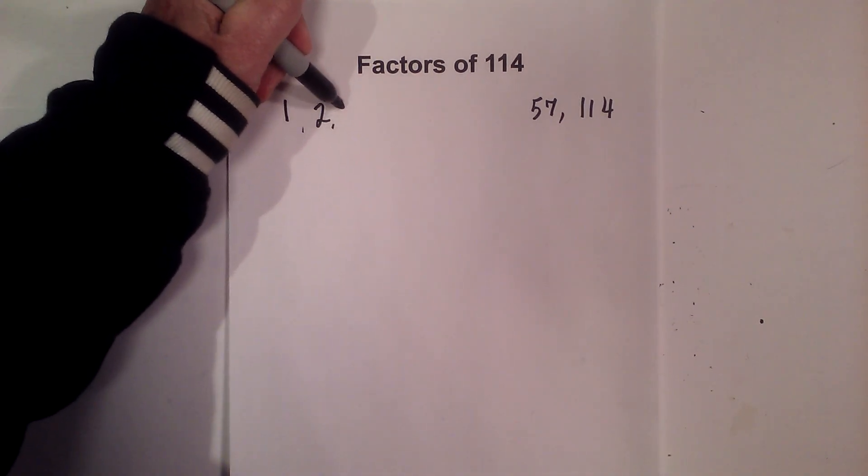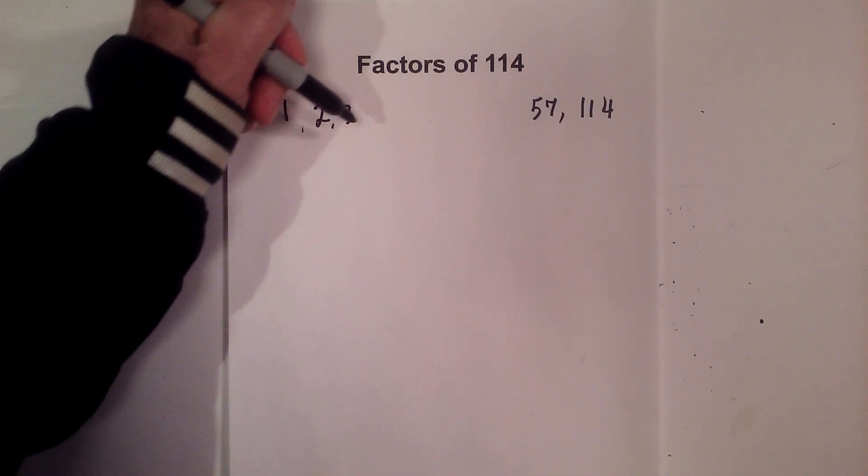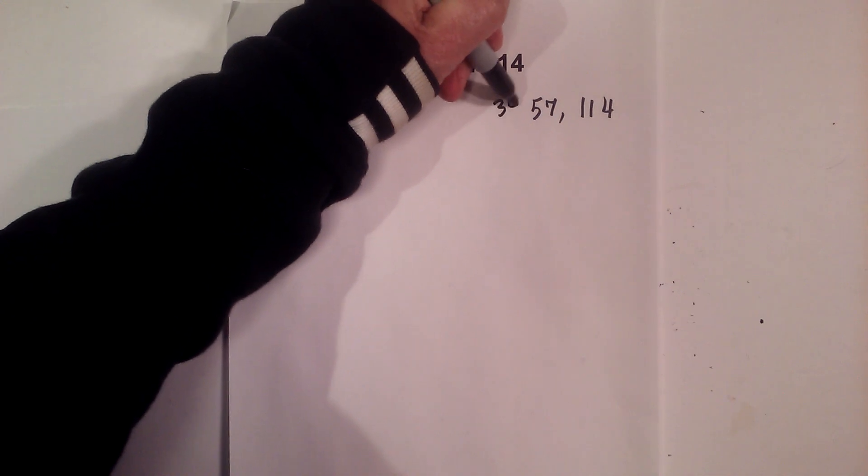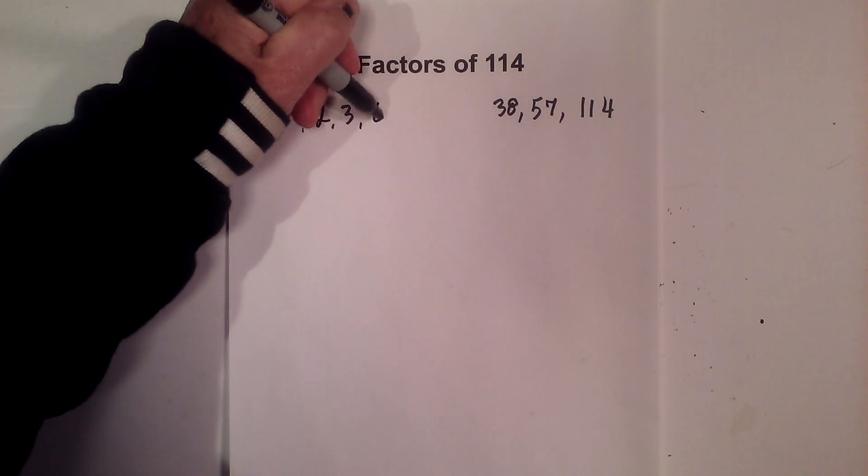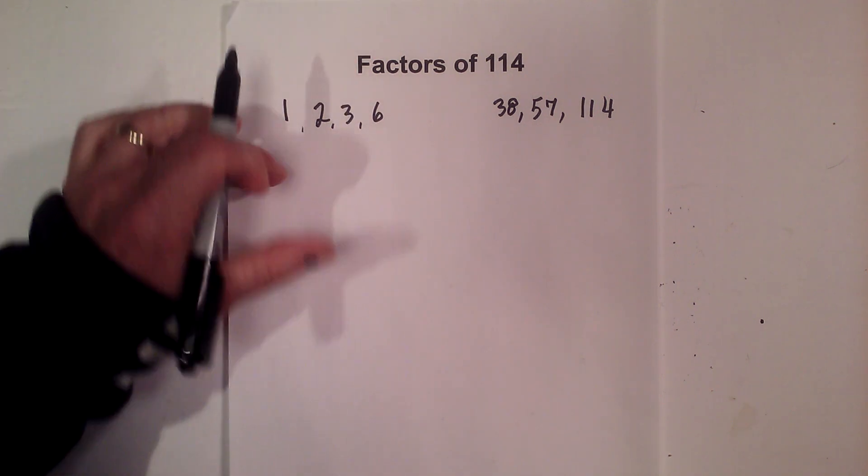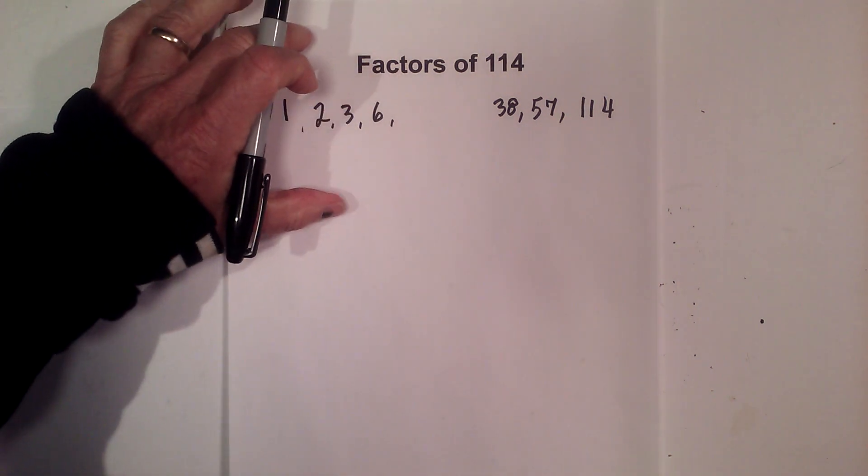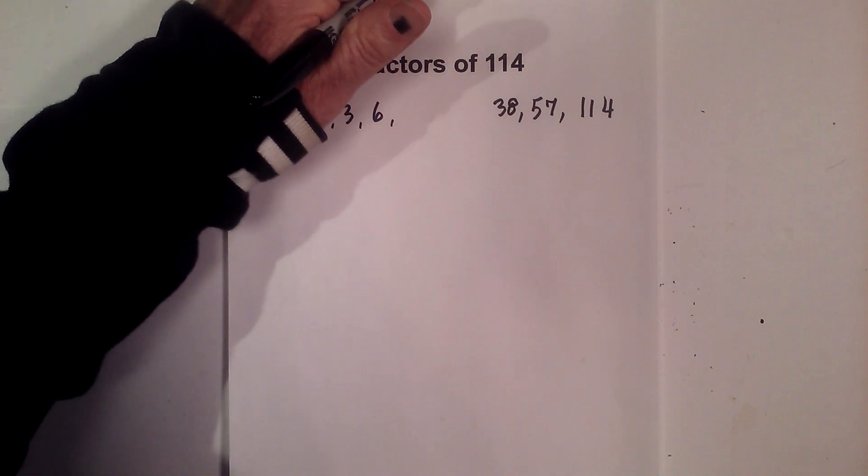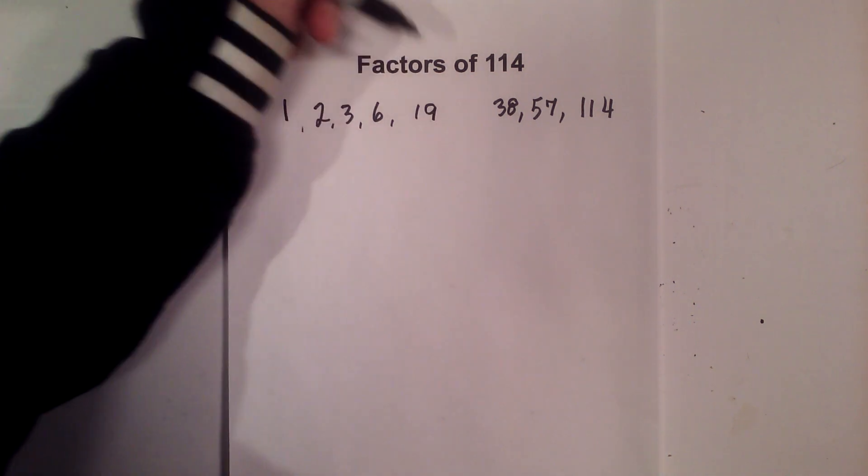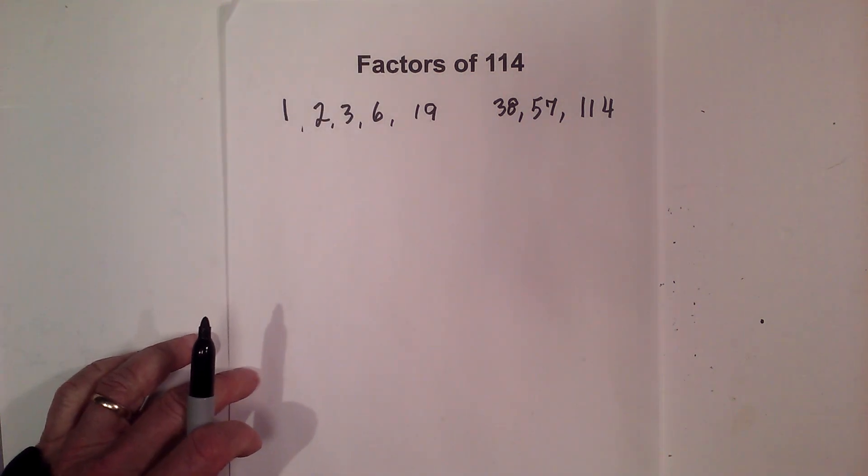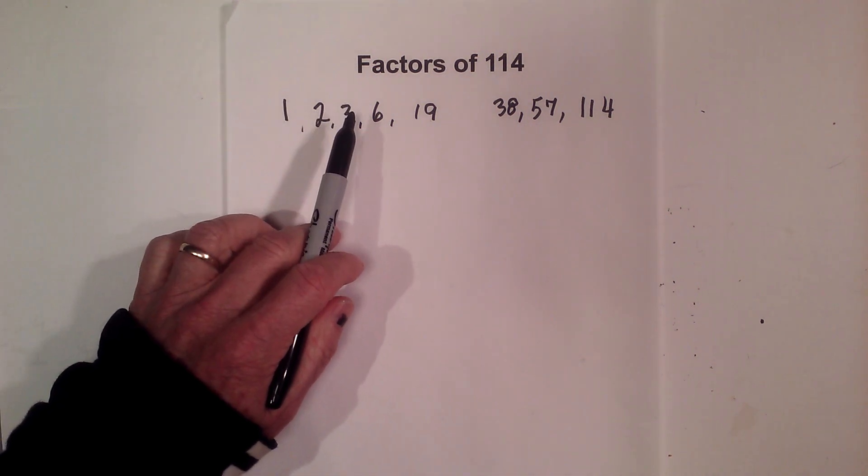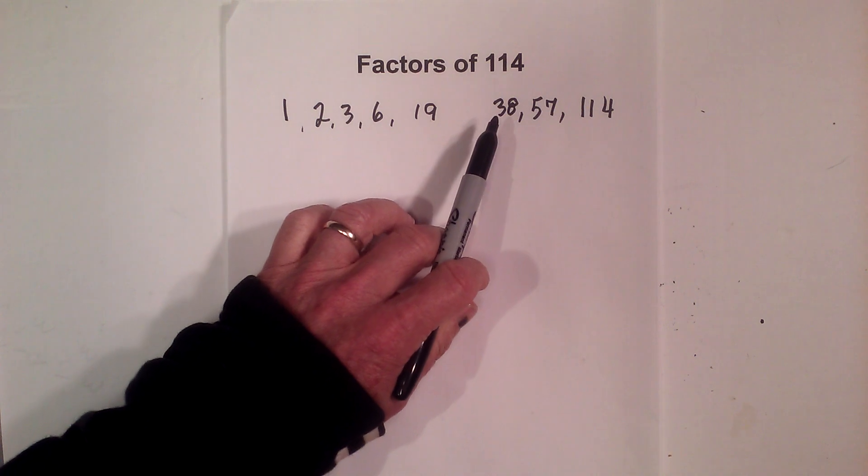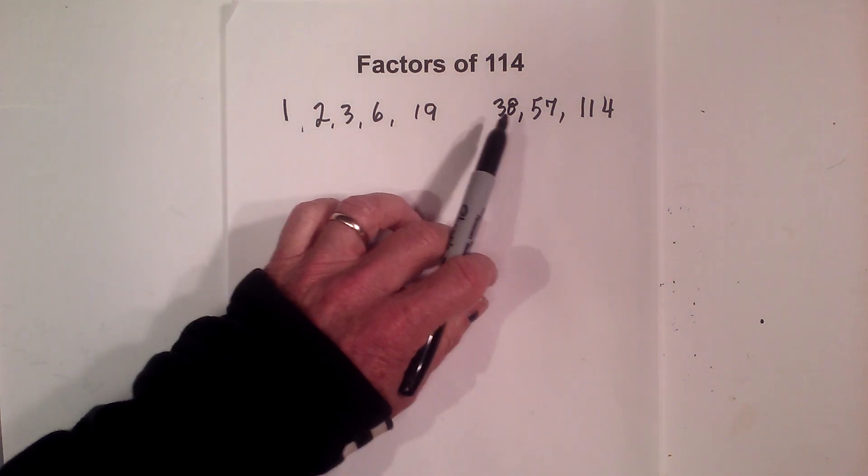Then 3 also goes into 114, that is 38 times, and 6 goes into 114 19 times. So the factors of 114 are 1, 2, 3, 6, 19, 38, 57, and 114.